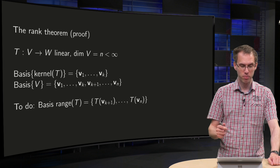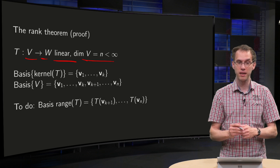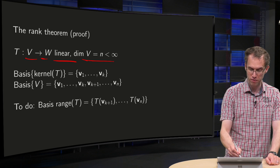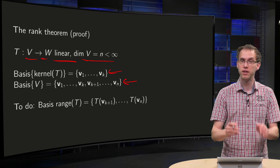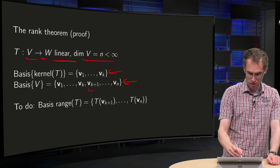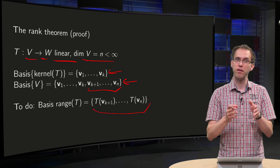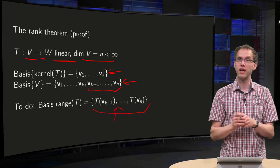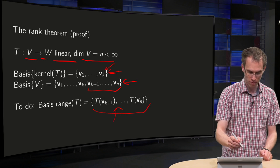So, what was the Rank-Nullity Theorem again? If you have a linear transformation from V to W, the dimension of V has to be finite, say equal to n. Then the kernel of T is a subspace, so it has a basis V1 up to Vk. You can add vectors to that to get a basis of V: V1 up to Vk, and Vk+1 up to Vn. We only had to show that those last vectors, when transformed, form a basis for the range of T. If we have that, we are done, and we have rank plus nullity equals n.